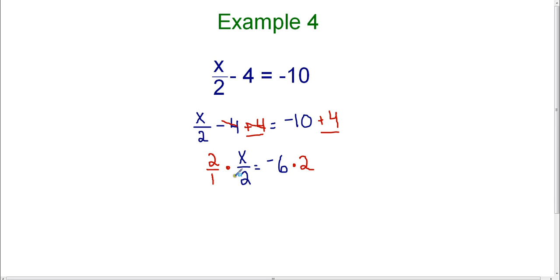Now, the reason that this works is because remember, if you have a number in the numerator and a number in the denominator that can be simplified, we can simplify those. So two divided by two is one. And one times x is just x. And that's how I get x by itself.